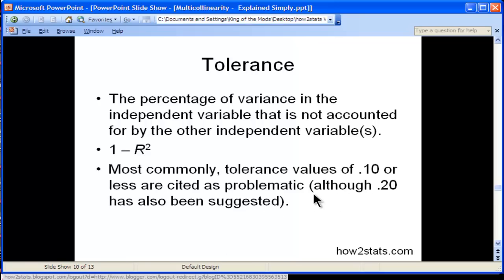Most commonly, tolerance values of 0.10 or less are cited as problematic. I also see values of 0.20 being suggested as the lowest level that tolerance can be.